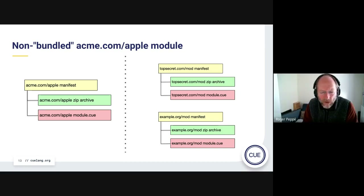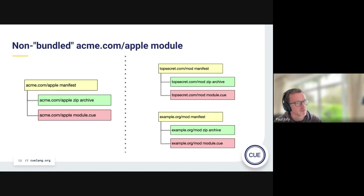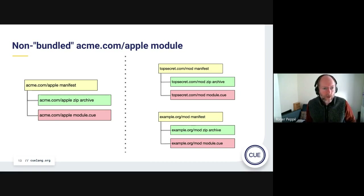Roger wonders whether qmod download is actually qmod vendor in the Go sense. Vendor in Go is a specific thing where it creates a vendor directory. Mod download just ensures the local modules cache is fully populated, so in a main module you can do go mod download and then disconnect your network cable — though you need to be connected for the download itself. If you're in a Docker environment you do qmod download and then make your image, that's the idea.